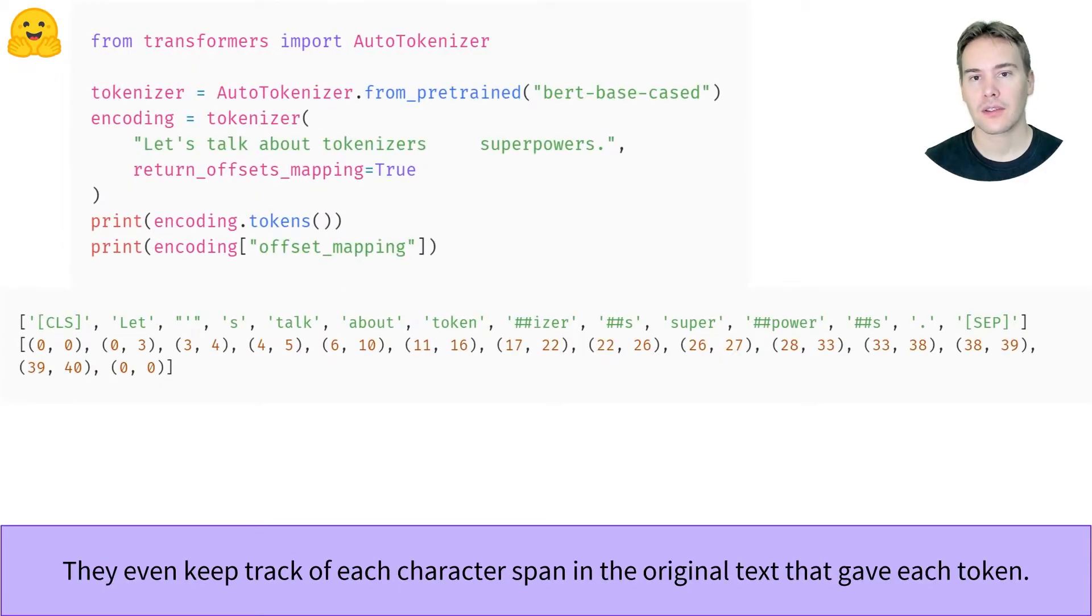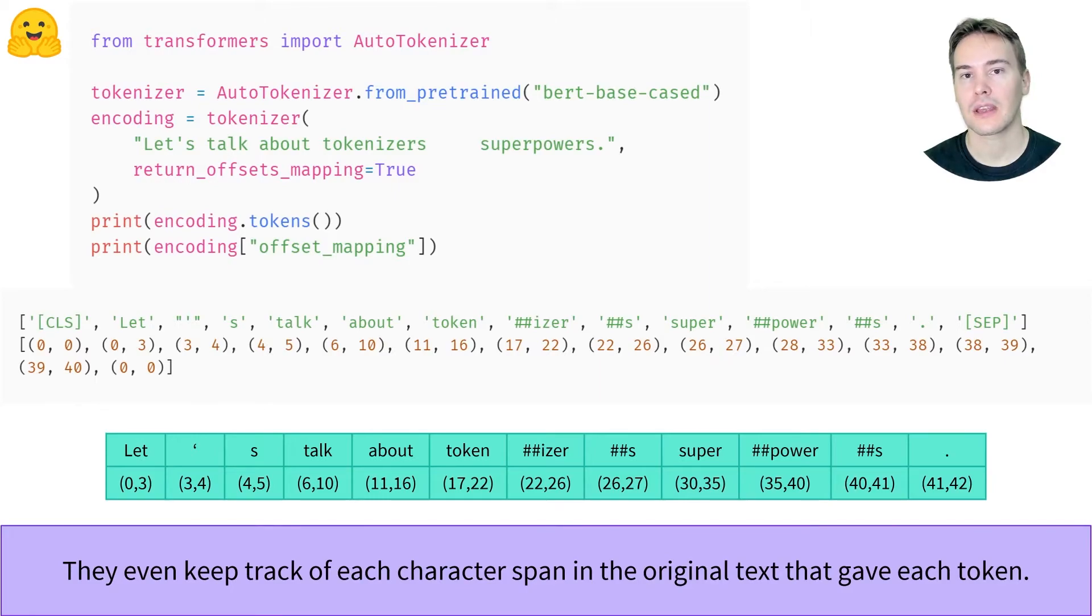Even better, the fast tokenizers keep track of the span of characters each token comes from, and we can get them when encoding it on one or several texts by adding the return offset mappings equal true argument. In this instance, we can see how we jump positions between the tokens because of the multiple spaces in the initial sentence.